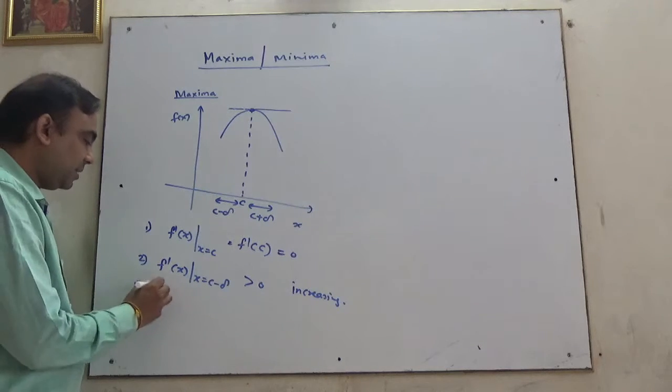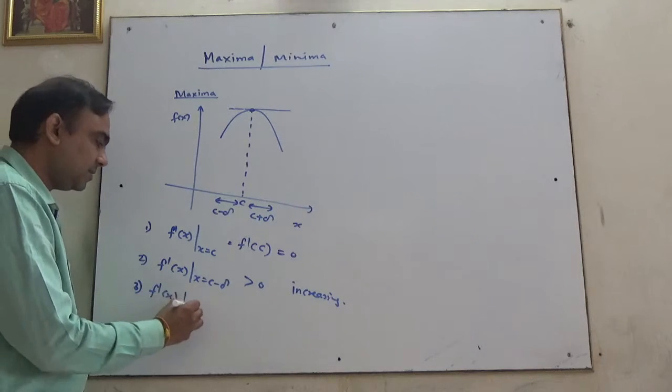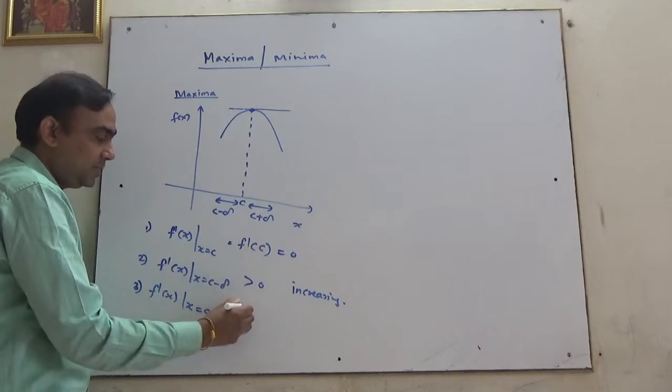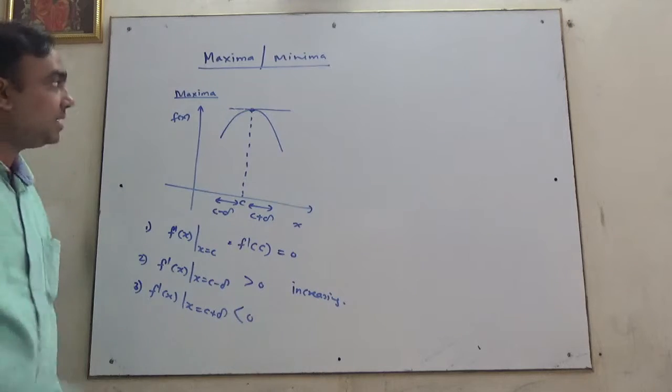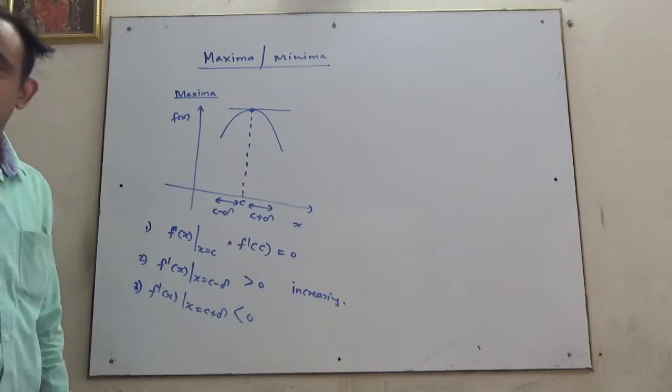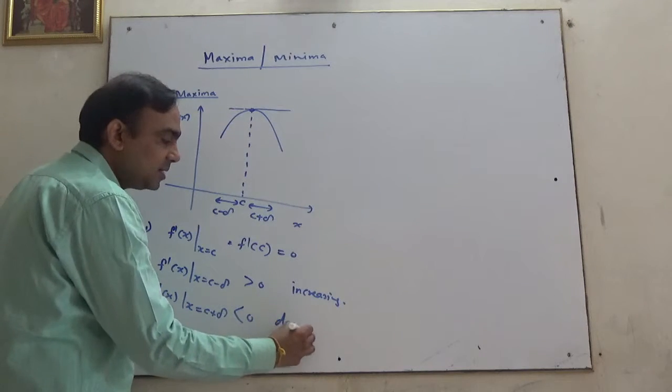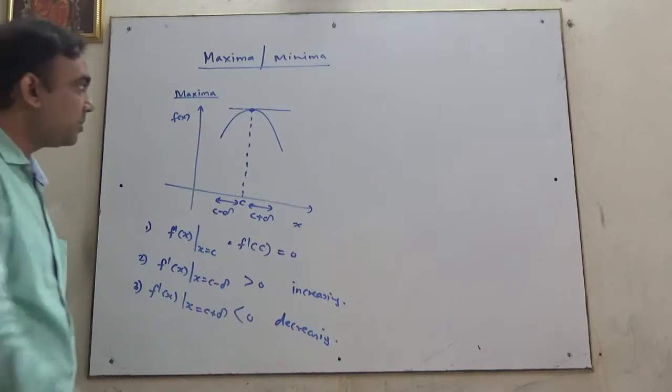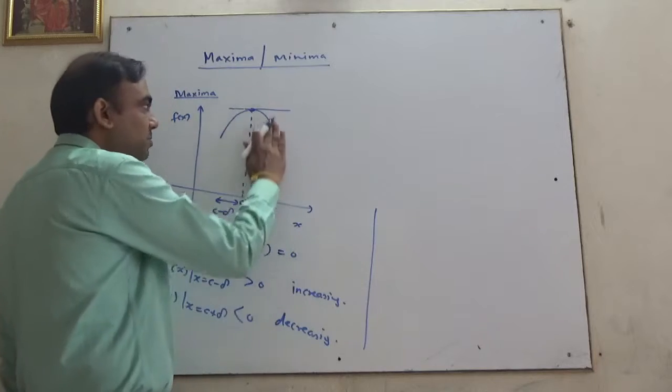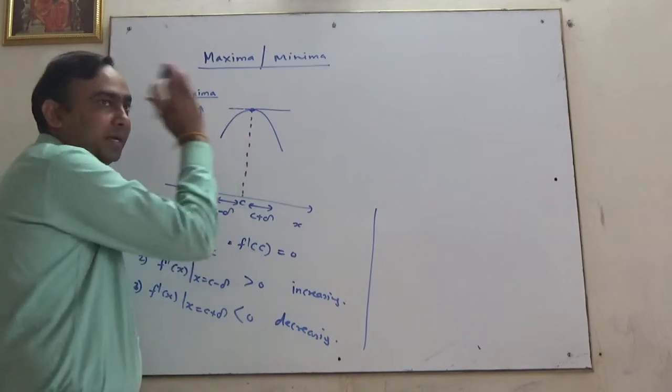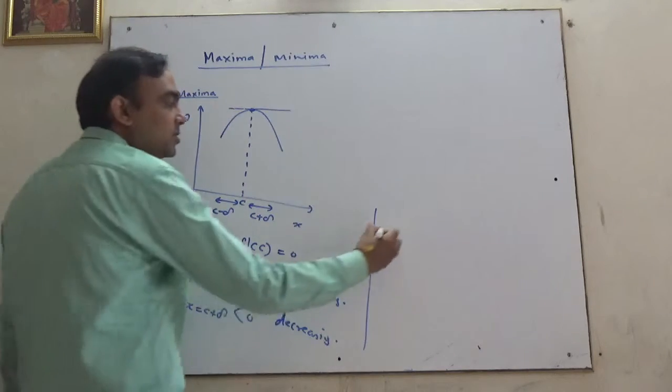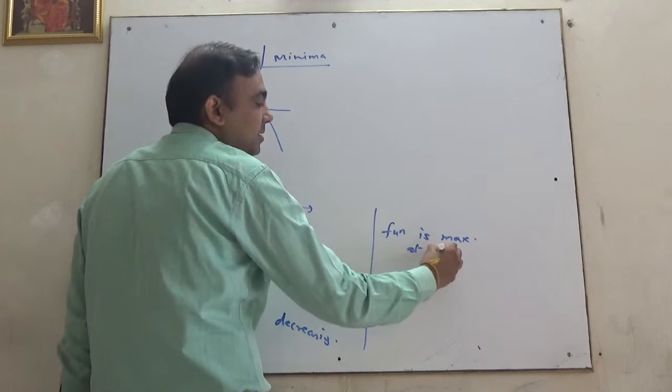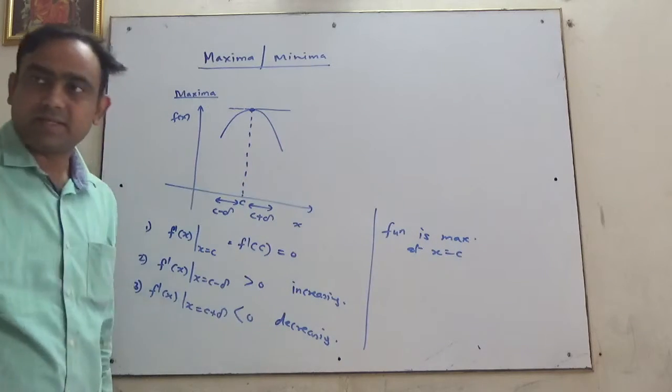And third, F dash x at x equals c plus delta, in this interval the slopes go down, meaning the function here is decreasing. If all this is satisfied, then in this particular local interval, the function is maximum at x equals c.